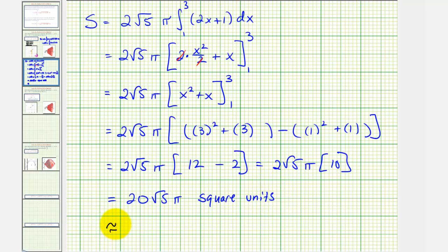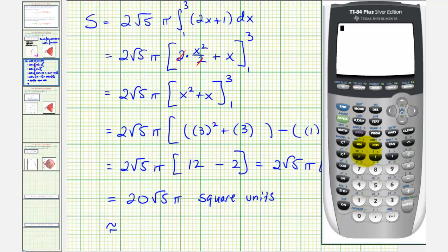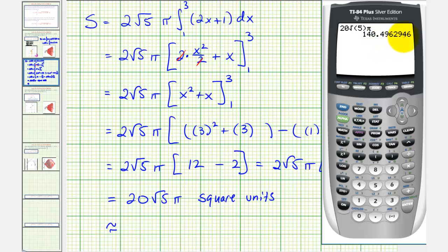Let's also get a decimal approximation for this. So we'd have twenty square root of five times pi, which is approximately 140.4963 square units.